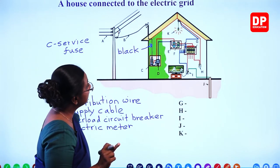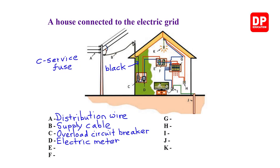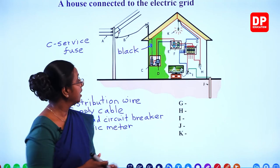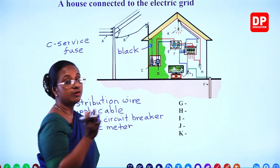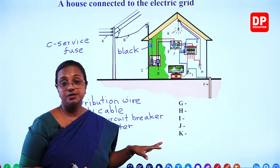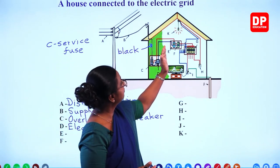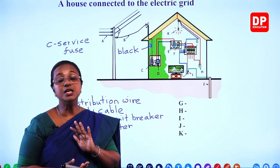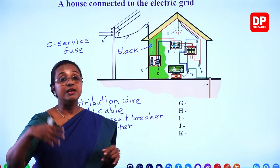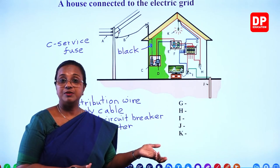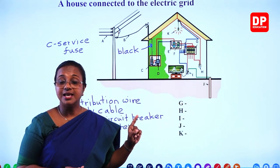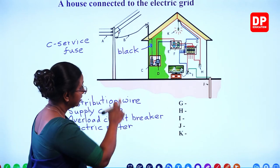From the electric meter, both wires are connected to component E, which is known as the isolator — that is the main fuse with main switch. Components C and D belong to the service provider, but from component E onwards, everything belongs to the household. Using the isolator, whenever needed, you can cut off the power supply to the household — for example when a repair is taking place — and then switch the power back on after.